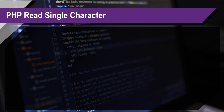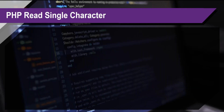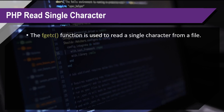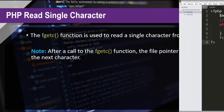Now let's talk about reading a single character. The fgetc function is used to read a single character from a file. Note: after a call to the fgetc function, the file pointer moves to the next character.